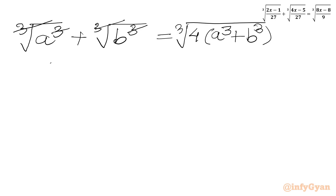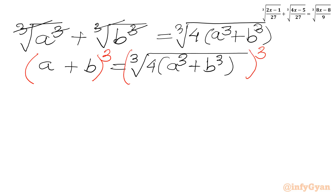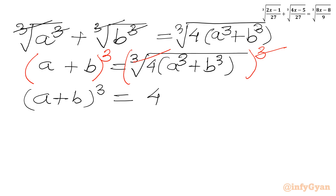Now we will cube both sides. On the RHS the cube root and cube cancel, giving 4(a³ + b³). On the LHS we write (a + b) whole cubed.